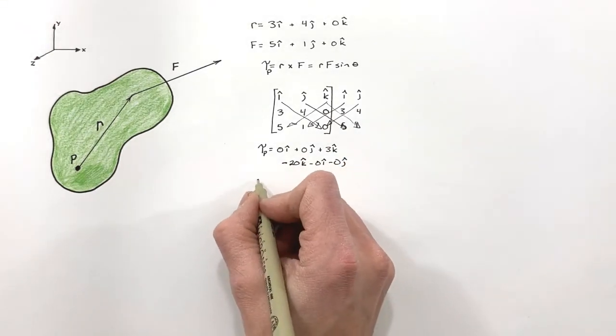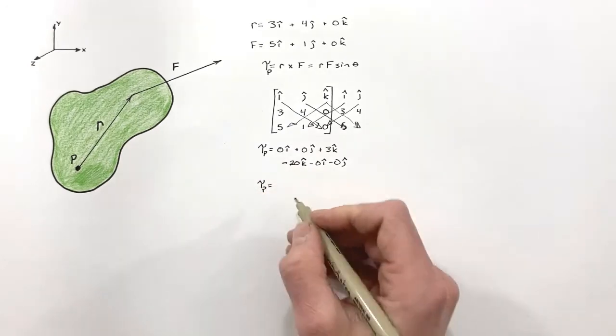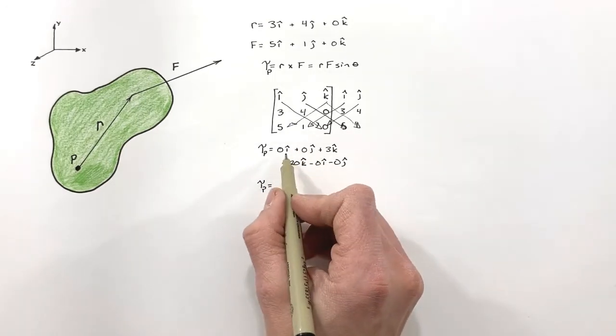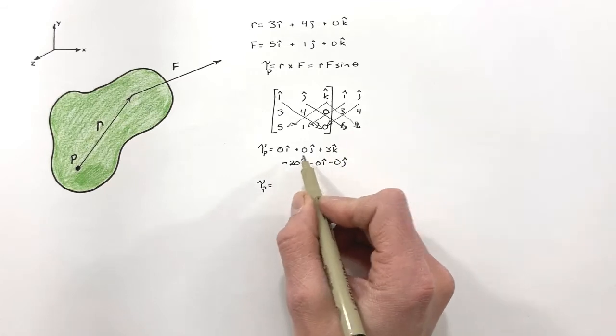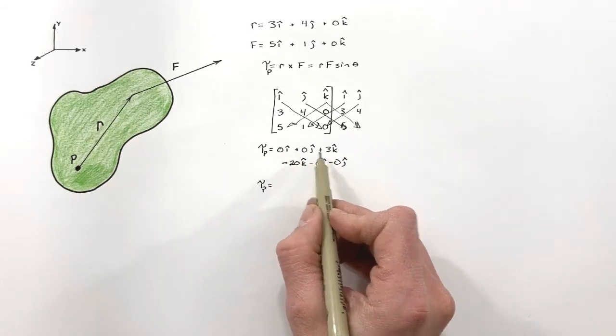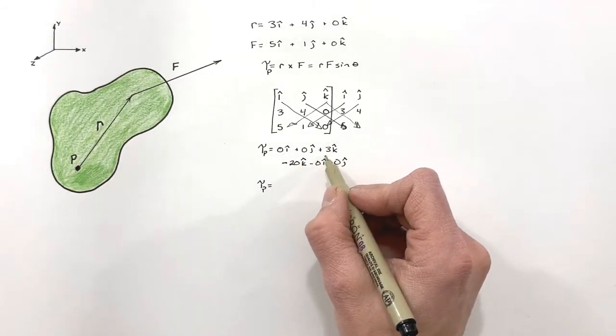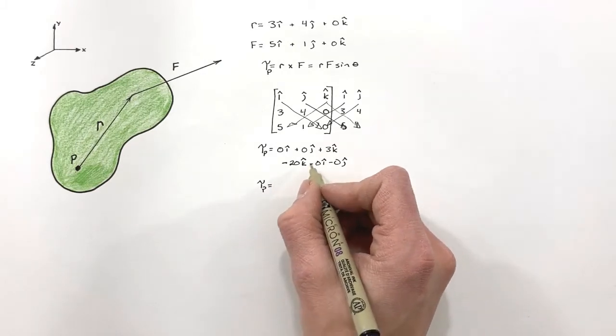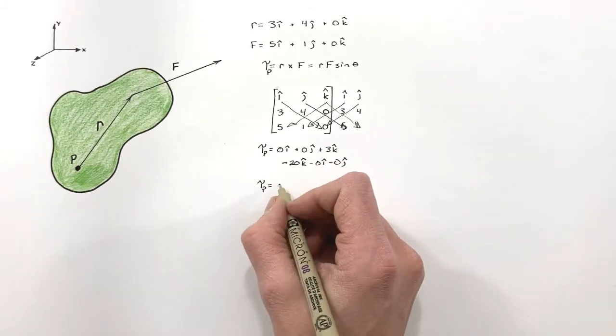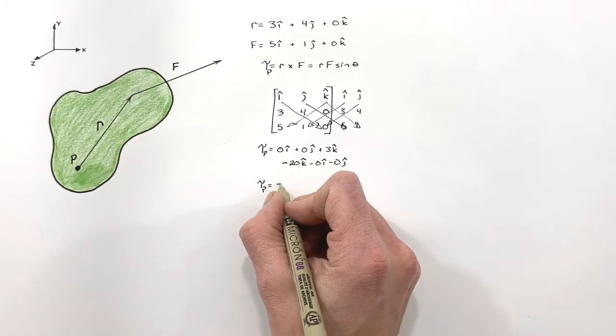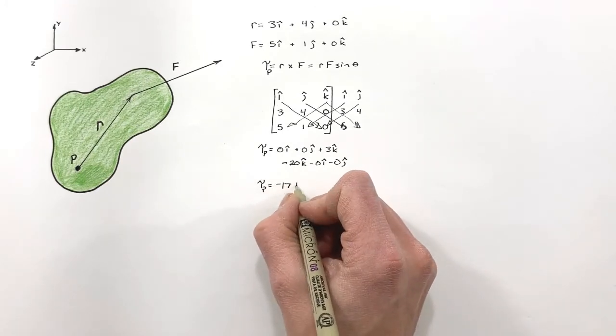And what we're left with for the total torque here around point p is simply in the k direction. You'll notice all of our i and j components were zero. So we have only a torque in the k direction or around the z axis. And you're going to find that works out to be negative 17 k.